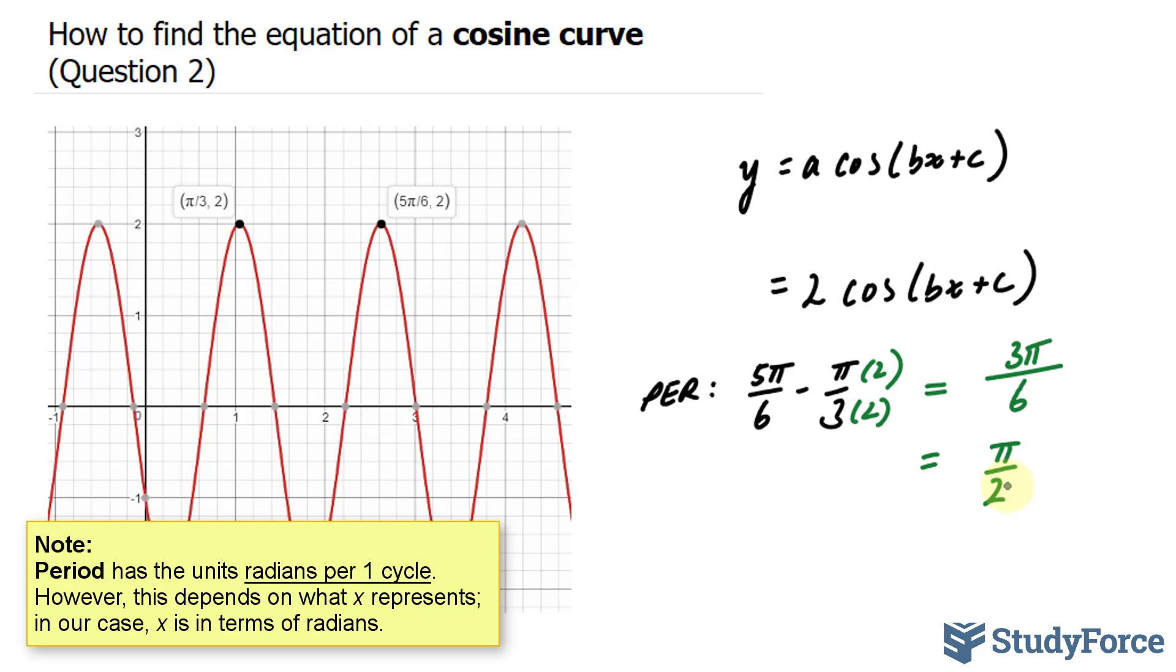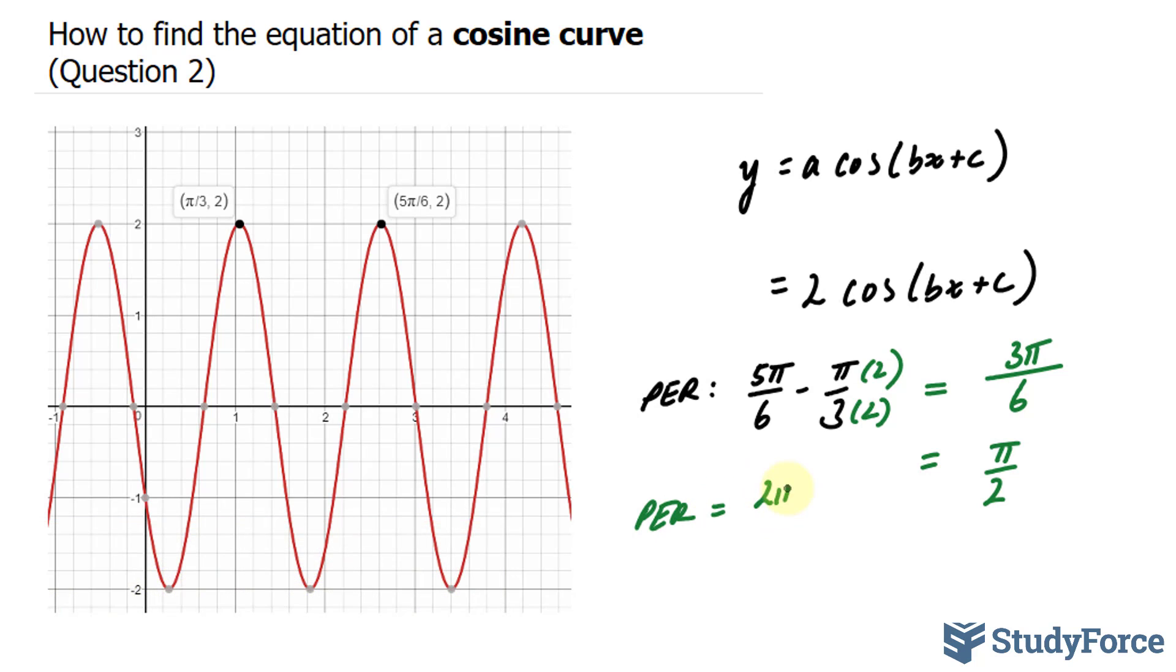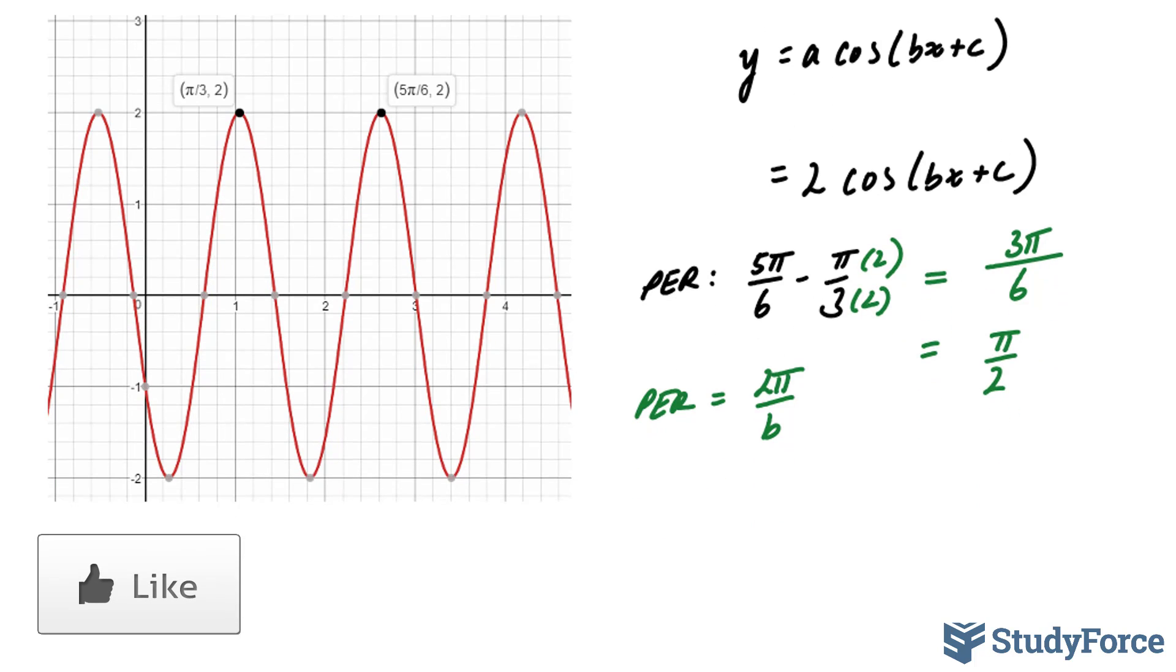With this, I can use the formula period is equal to 2 pi over b. Now because our numbers are in radians, you have to use this formula in particular. Otherwise, instead of 2 pi, you would use 360. So I'm going to replace this period with pi over 2. And now, I have to solve for b. Whatever b is, I can replace back into my equation. And here's how to solve for b.